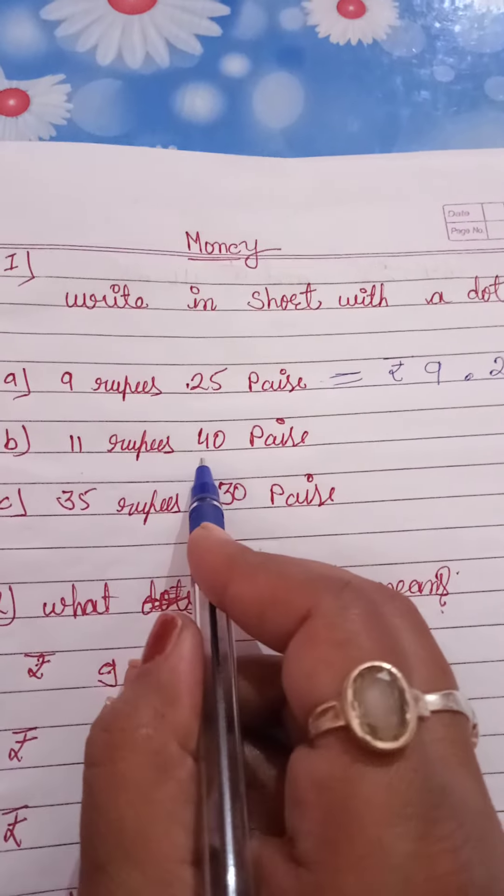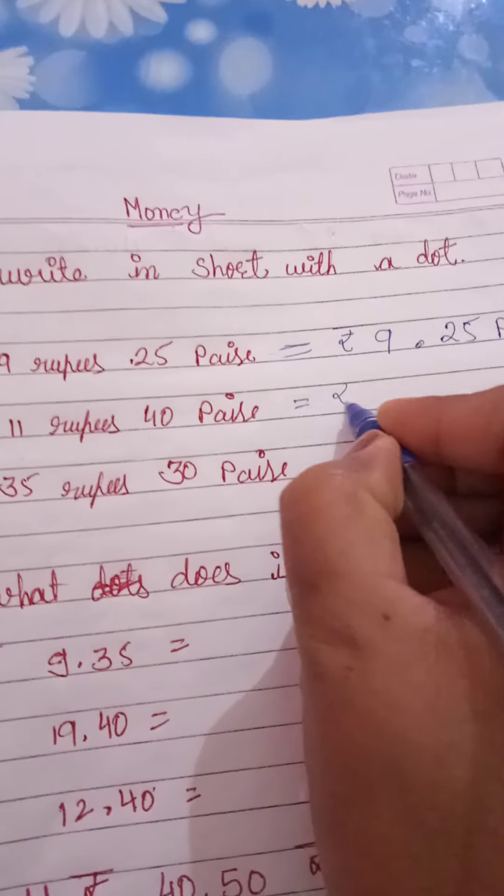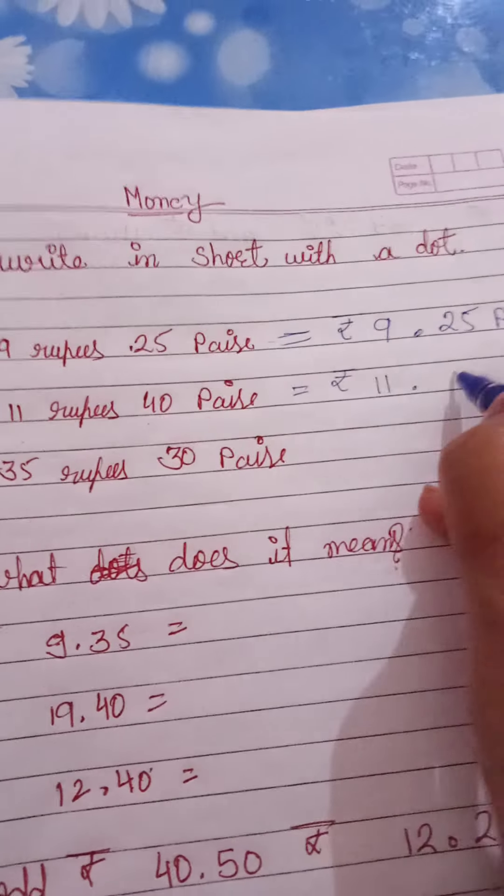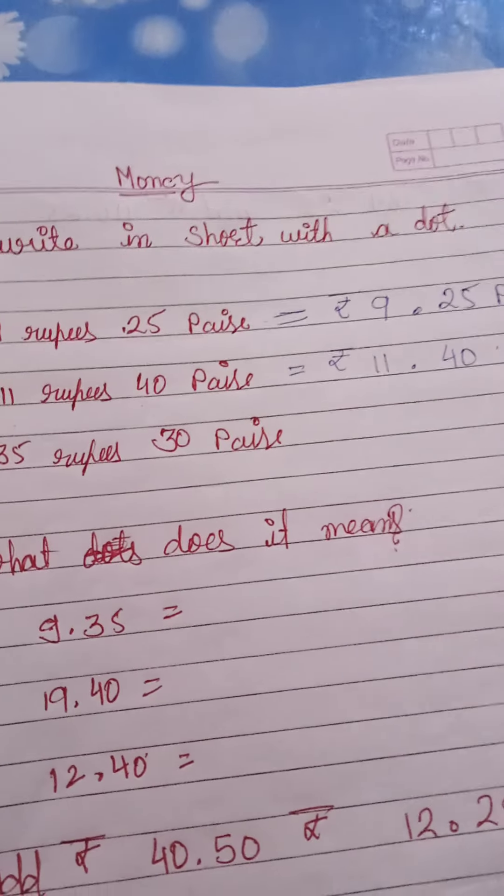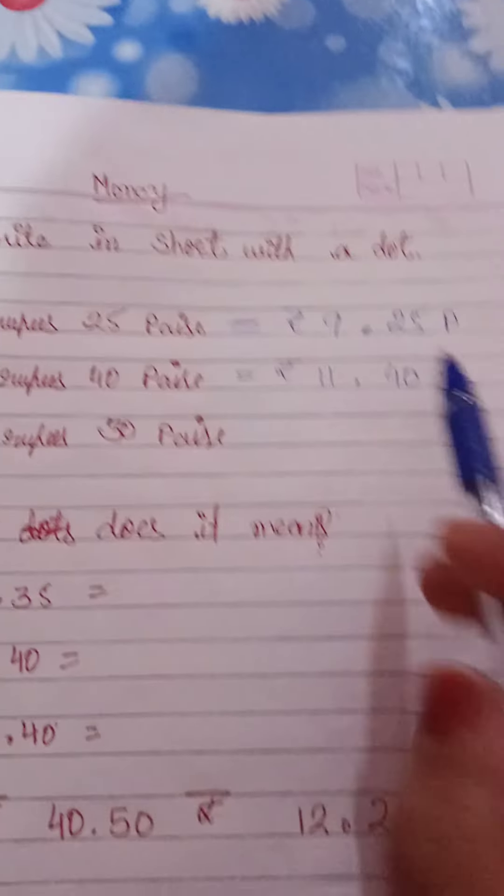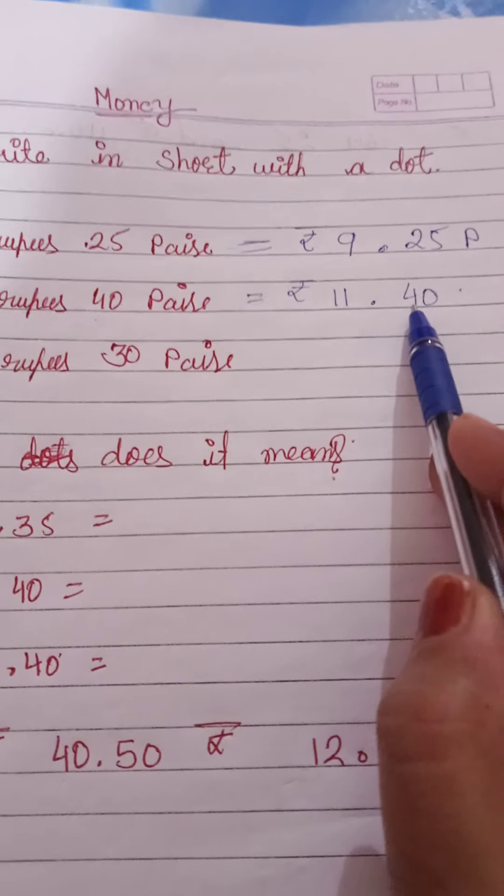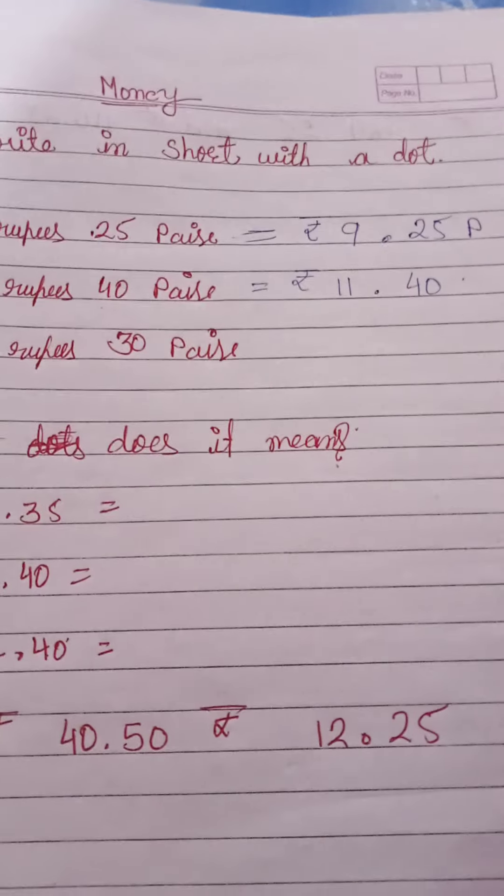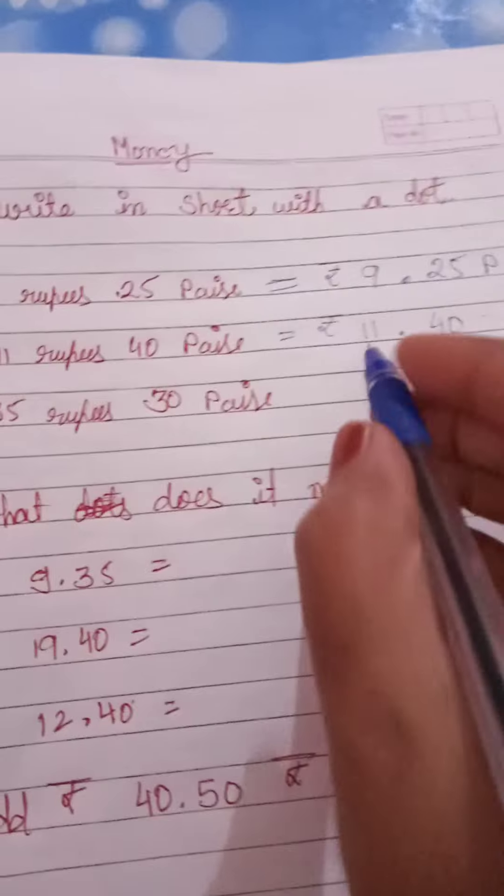11 rupees 40 paise, so 11 rupees dot 40 paise. But you will not write the paise because you have to write in short, and now you can understand that after the dot this is paise. So 35 rupees 30 paise.